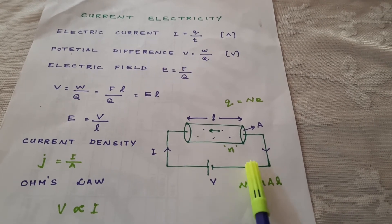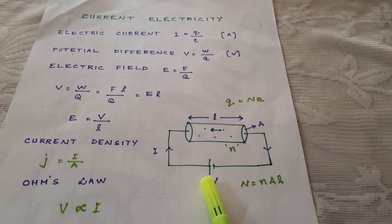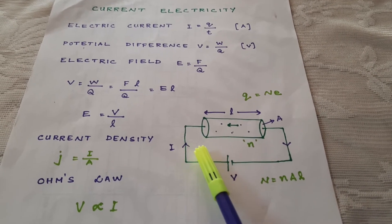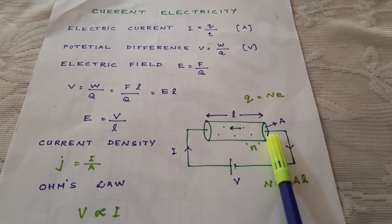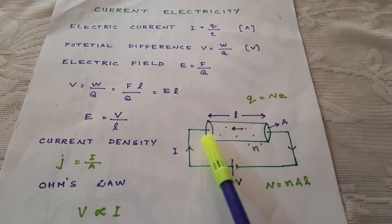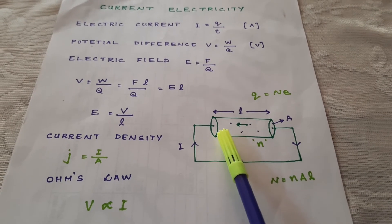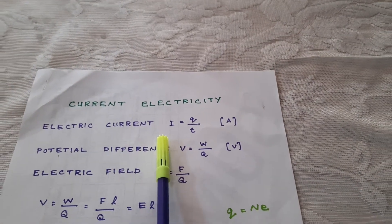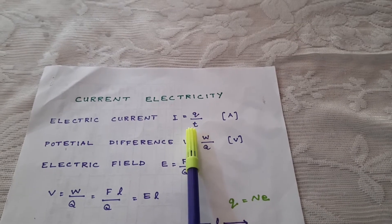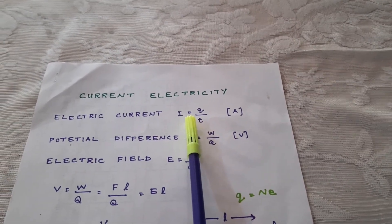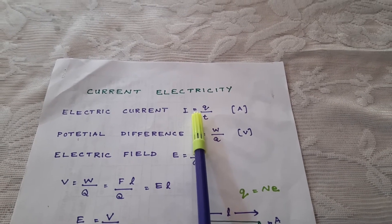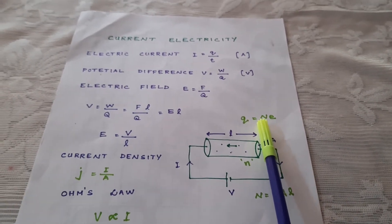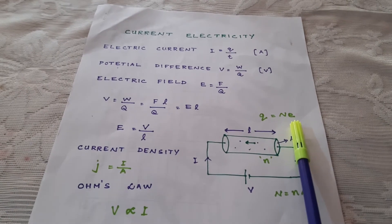When a potential difference is applied across the conductor — that is, a cell is connected across the conductor — the electrons experience a force towards the positive terminal. So the electrons will move from one end of the conductor to the other end. This motion of the electrons constitutes electric current. The electric current is defined as the charge flowing per second. Q is the charge flowing through the conductor, and Q is equal to N times e, where N is the total number of electrons and e is the charge of each electron.